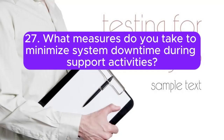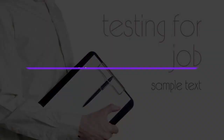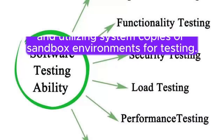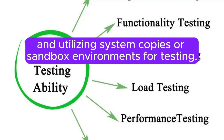Question 27: What measures do you take to minimize system downtime during support activities? Answer: Minimizing system downtime involves planning support activities during non-business hours, performing impact assessments, and utilizing system copies or sandbox environments for testing.